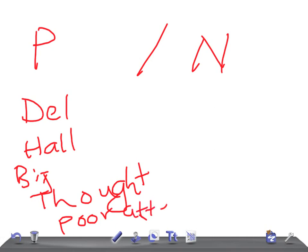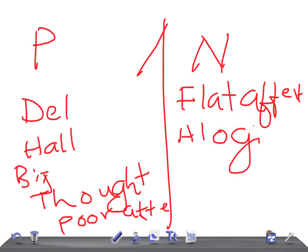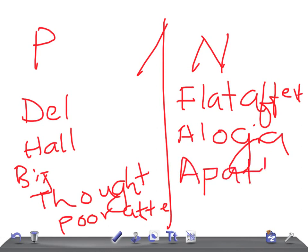The negative symptoms include flat affect, alogia (no speech), avolition, apathy, and anhedonia. So those are the positive and negative symptoms of schizophrenia.